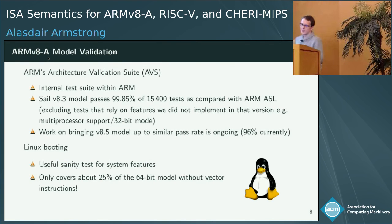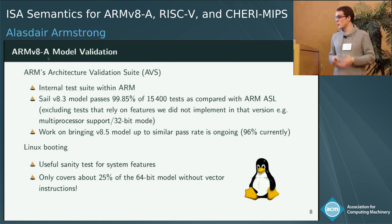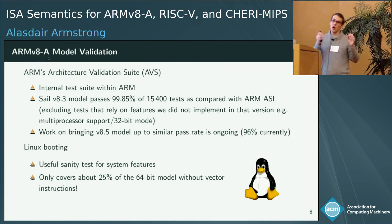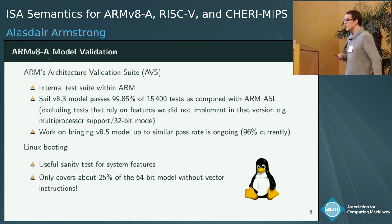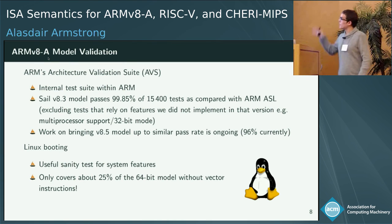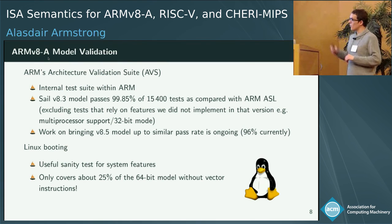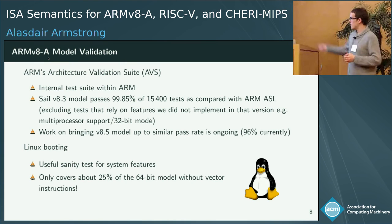We've got this giant model translated from ARM's model, so we want to make sure it actually works. One thing made possible by our collaboration with ARM is that we can give our specification to Alistair Reid within ARM, who runs the ARM architecture validation suite on our model. This suite is the authoritative definition of what it means to be an ARM processor — it's what Apple and others must pass to be certified. For the 8.3 model in the paper, we passed about 99.85% of 15,000 tests compared with the ARM ASL implementation. We're now working on the 8.5 model, currently at about 96% — it has more features, which is why it's slightly lower.